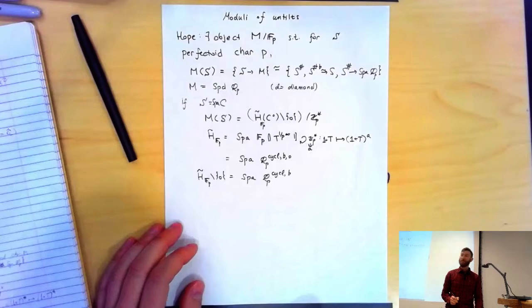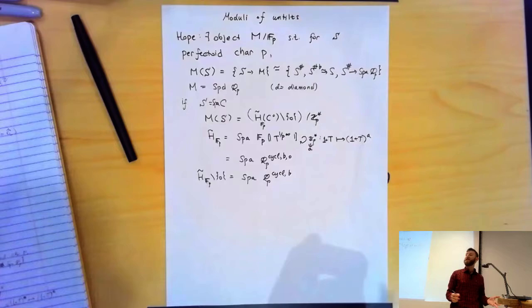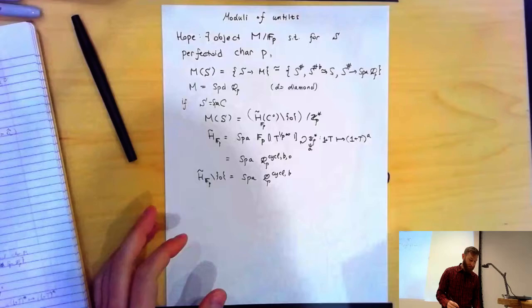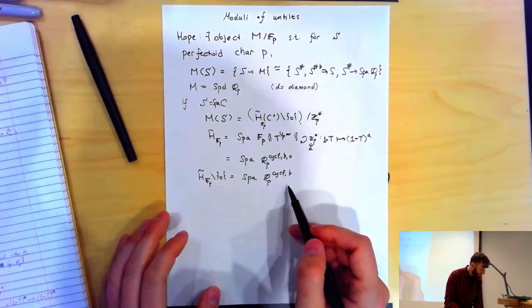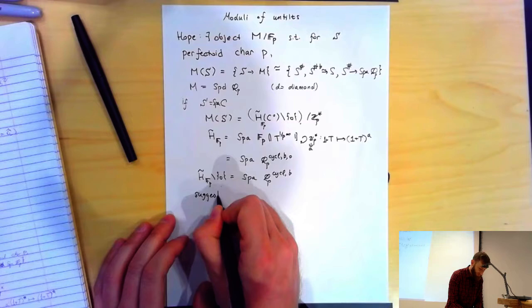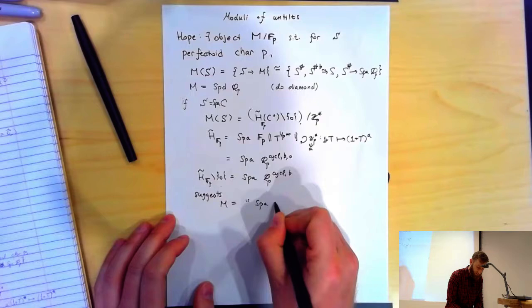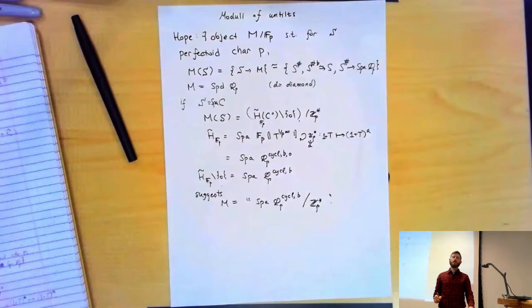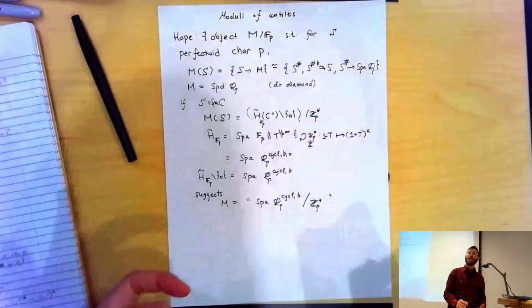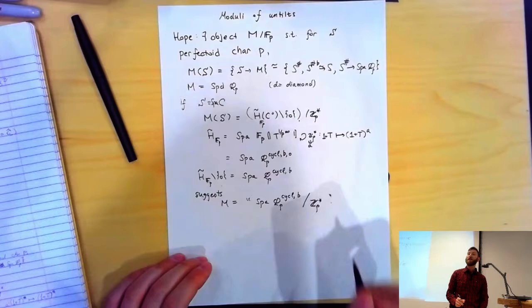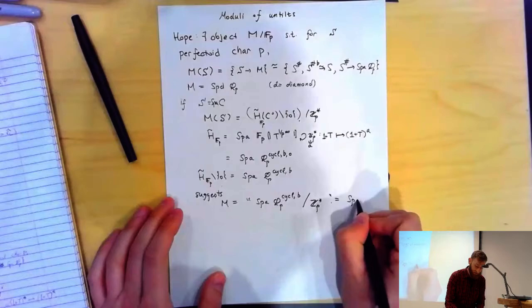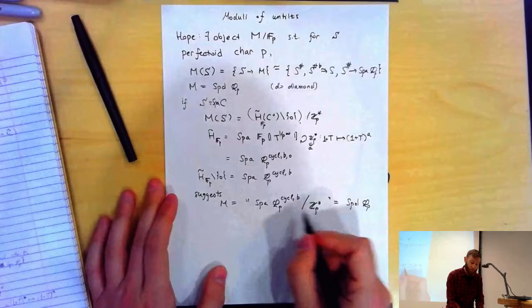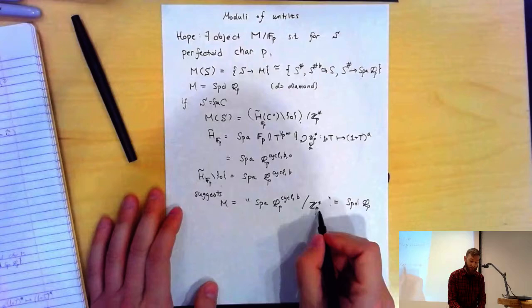What happens when I remove the origin? That's just like passing to the quotient field, so this is the same as Spa(Q_p^{cyc,♭}), which is an honest perfectoid space — just one point. So this right here is the C-points of that object, and this suggests that M should be something like a quotient of Spa(Q_p^{cyc,♭}) modulo the action of Z_p×, because Z_p× is the Galois group of Q_p^{cyc} over Q_p, and so this quotient is like taking Z_p×-invariants, which should result in something like Q_p.